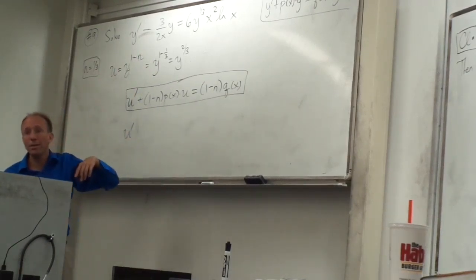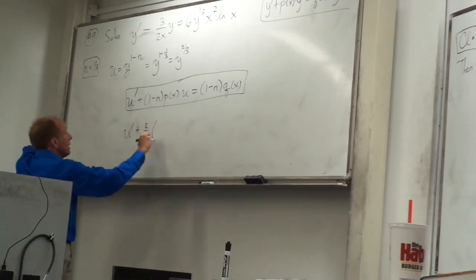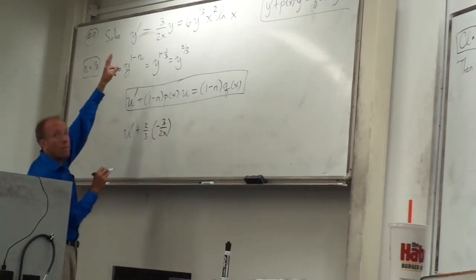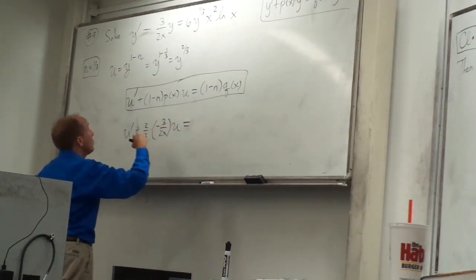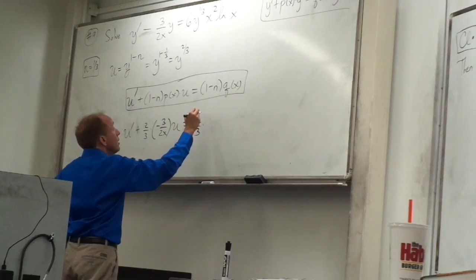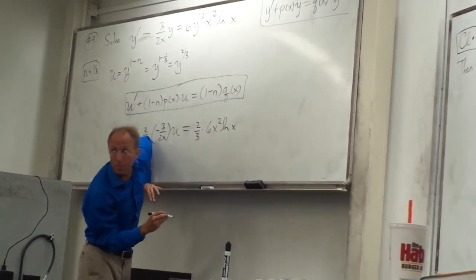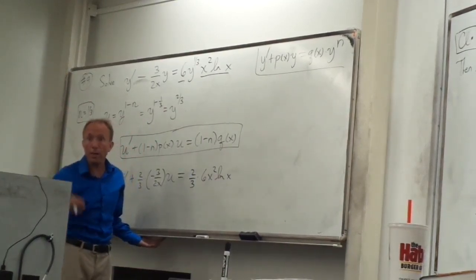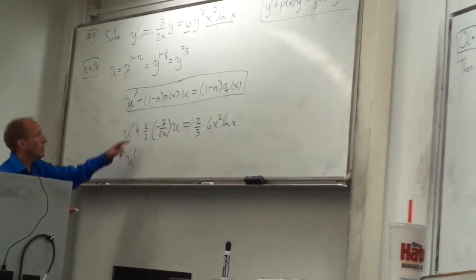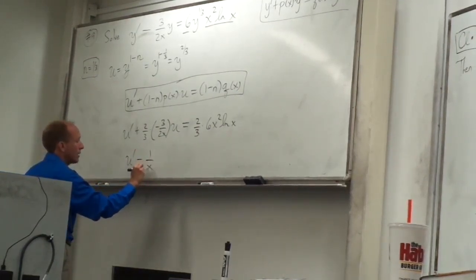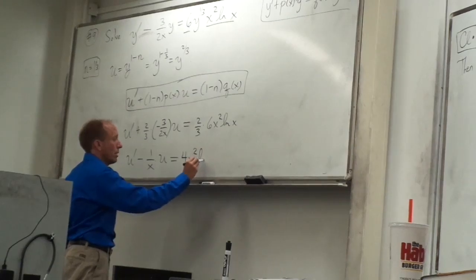So (1 minus n) is actually equal to what? Two thirds. It's two thirds, right. So plus two thirds times p of x. Now p of x includes the minus sign, so the p of x here is, from the original problem, negative 3 over 2x. And that's times u equals, and then we have two thirds of q of x. So what is q of x? Six x squared ln of x — six x squared ln of x, very good. It's basically everything except for the y power part. So we just have that.